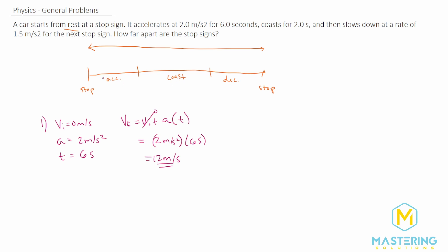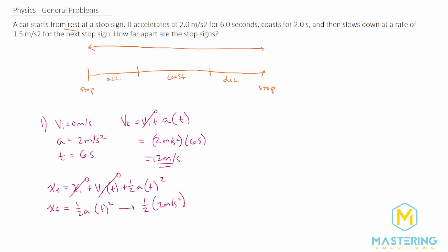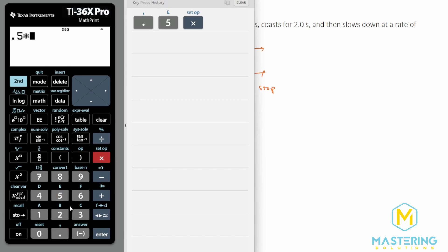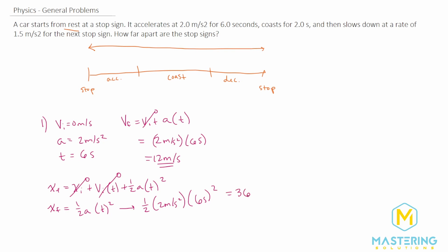We'll use that in the second section, but first let's find x_final. We use x_final equals x_initial plus v_i times t plus one-half times acceleration times time squared. Since x_initial and v_initial are both zero, this simplifies to x_final equals one-half times acceleration times time squared. Plugging in: one-half times two times six squared gives us a distance of 36 meters for the first section.